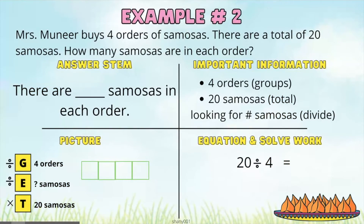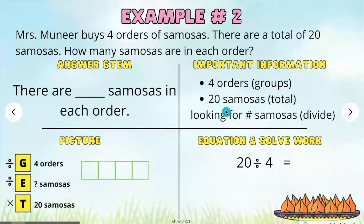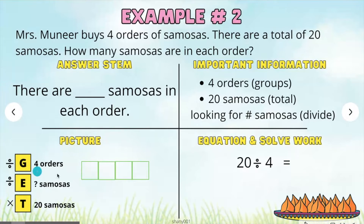Let's go ahead and solve the problem using a problem-solving model. My answer stem is: there are blank samosas in each order. Our facts are: there are 4 orders, which is the groups; there's a total of 20 samosas, which is the total; and we are looking for the number of samosas in each order. Groups is the 4 orders, each is how many samosas, and the total is 20 samosas.